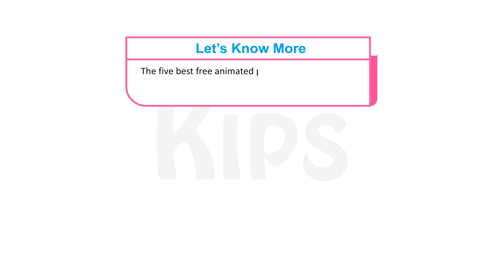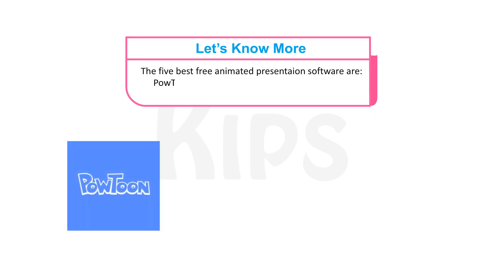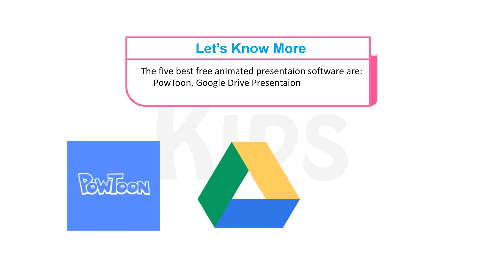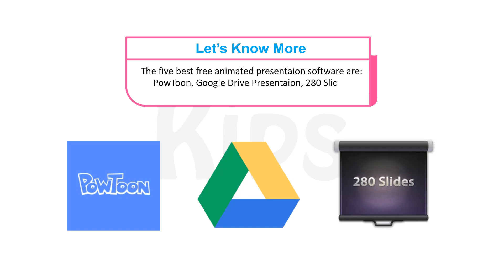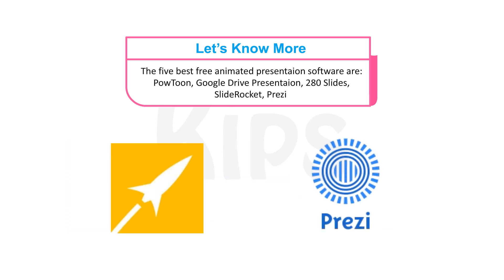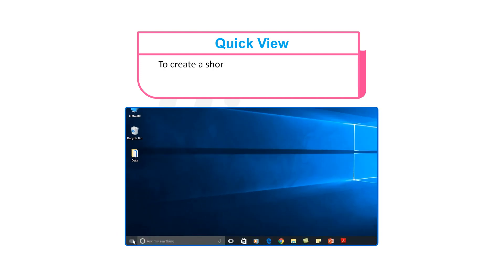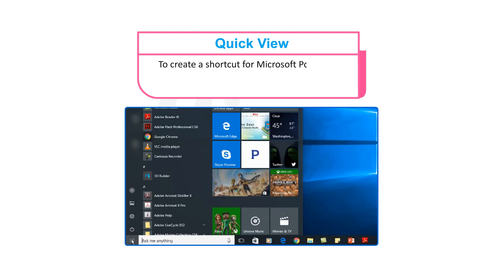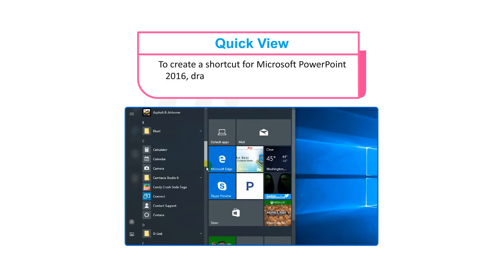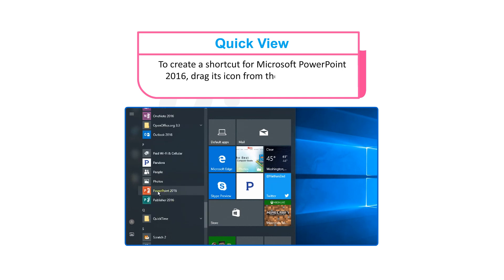Let me share an interesting fact with you. The 5 best free animated presentation software are PowerToon, Google Drive Presentation, 280 Slides, SlideDrawKit, and Prezi. Another fact to note is that to create a shortcut for Microsoft PowerPoint 2016, drag its icon from the Start menu to the Desktop.